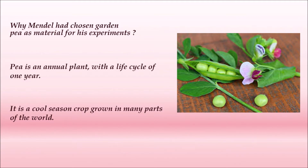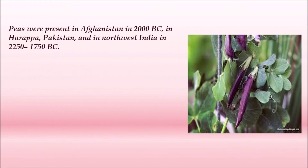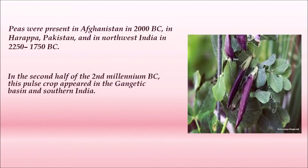Peas were present in Afghanistan in 2000 BC, in Harappa, Pakistan, and in northwest India between 2250 to 1750 BC. In the second half of the second millennium before Christ, this pulse crop appeared in the Gangetic basin and southern India.